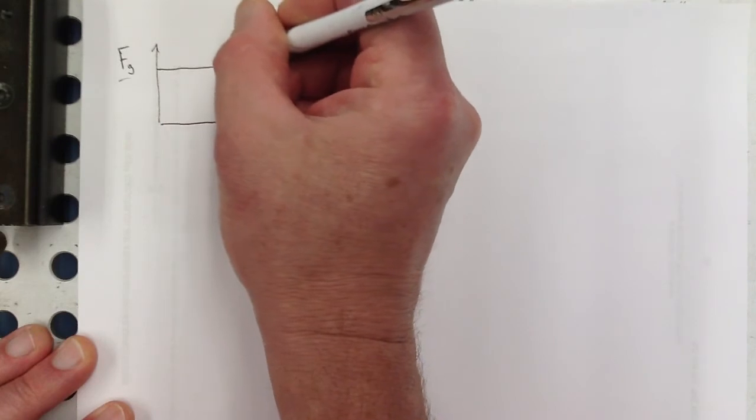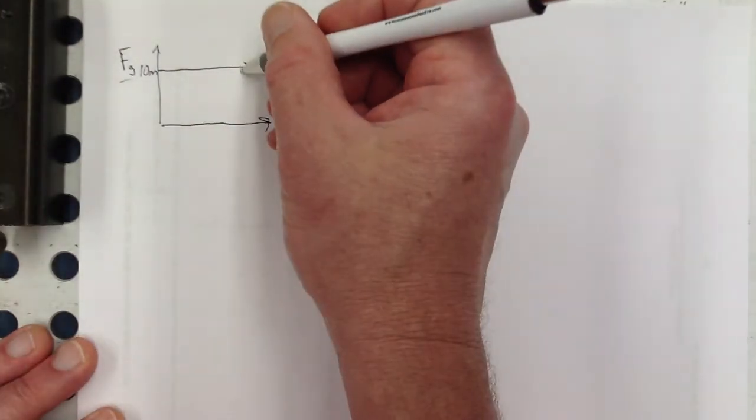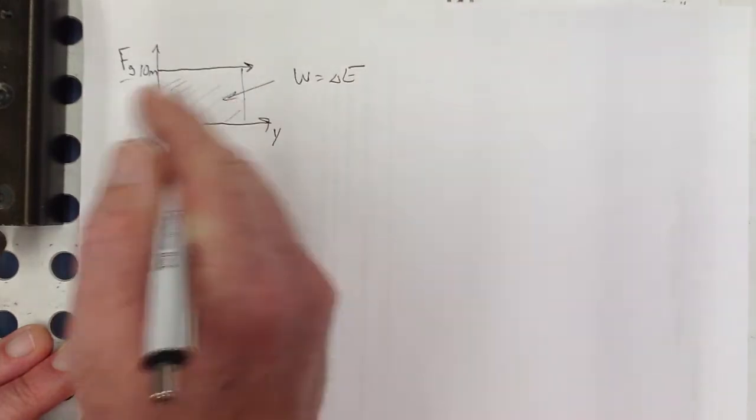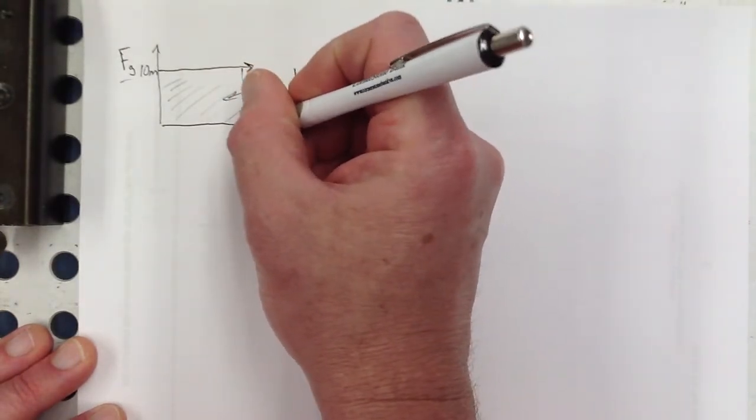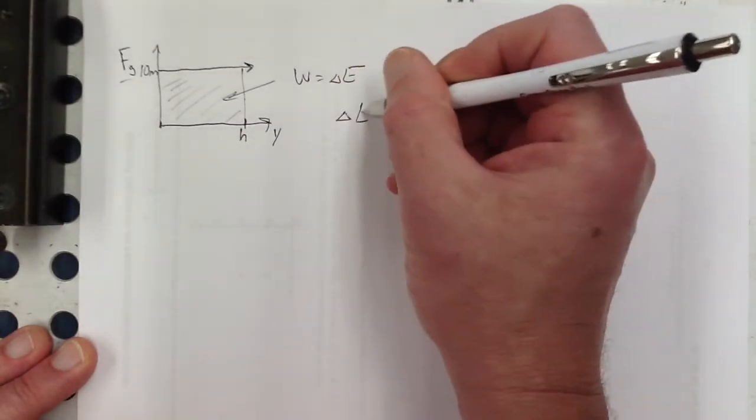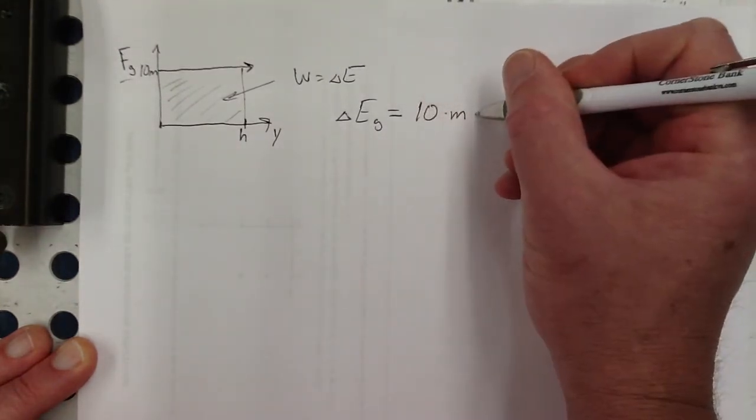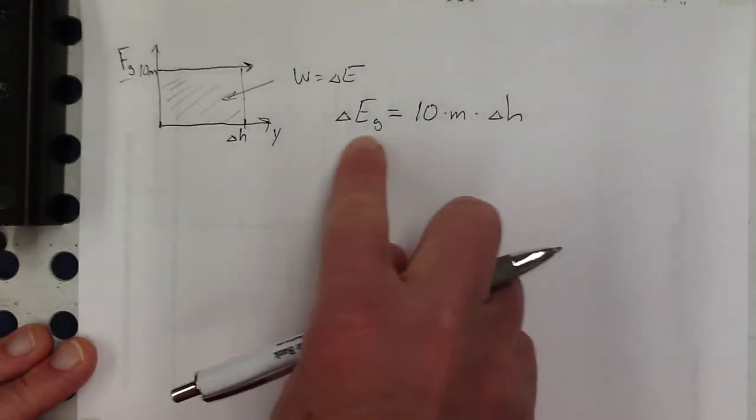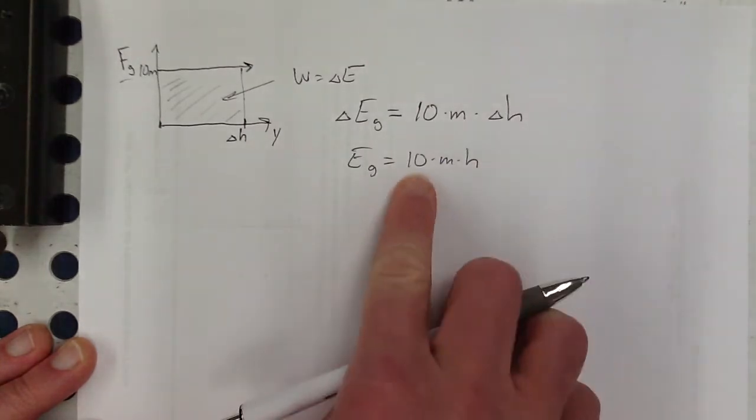So we do know that the force of gravity is constant, about 10 times the mass. So if we want to know how much work is done here, well, that's easy. It's just a rectangle. So I could call this, let's say we moved it some height h, so change in E_g is equal to 10 times mass times the change in height. And if this is delta E_g, that means that our gravitational potential energy is just equal to 10 times mass times height.